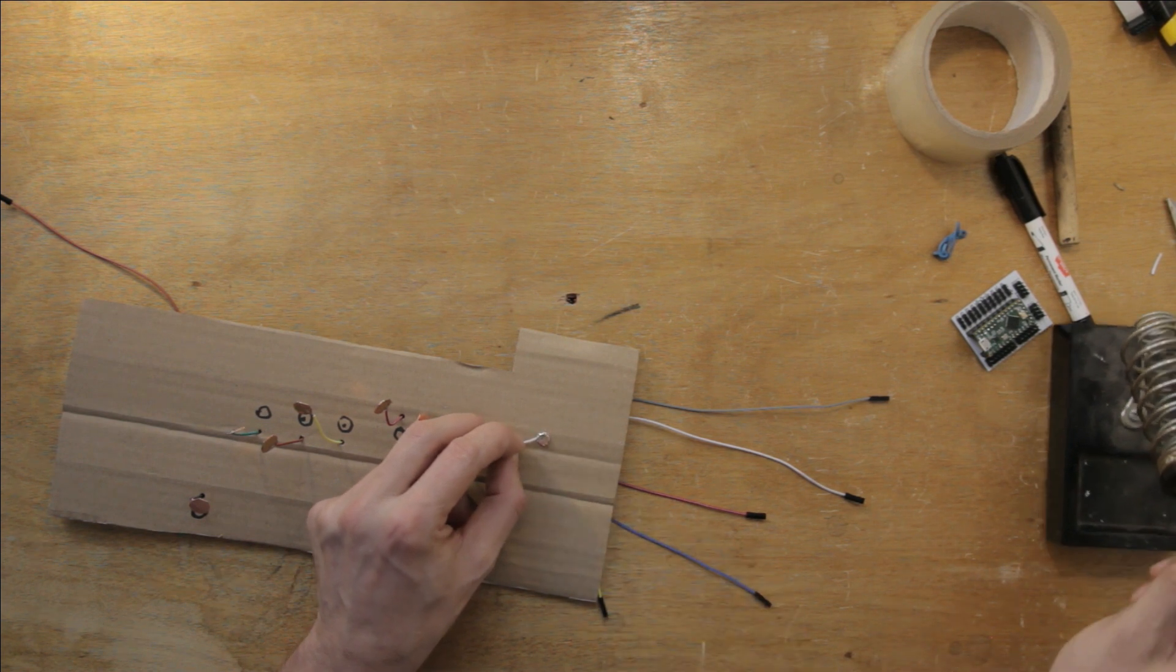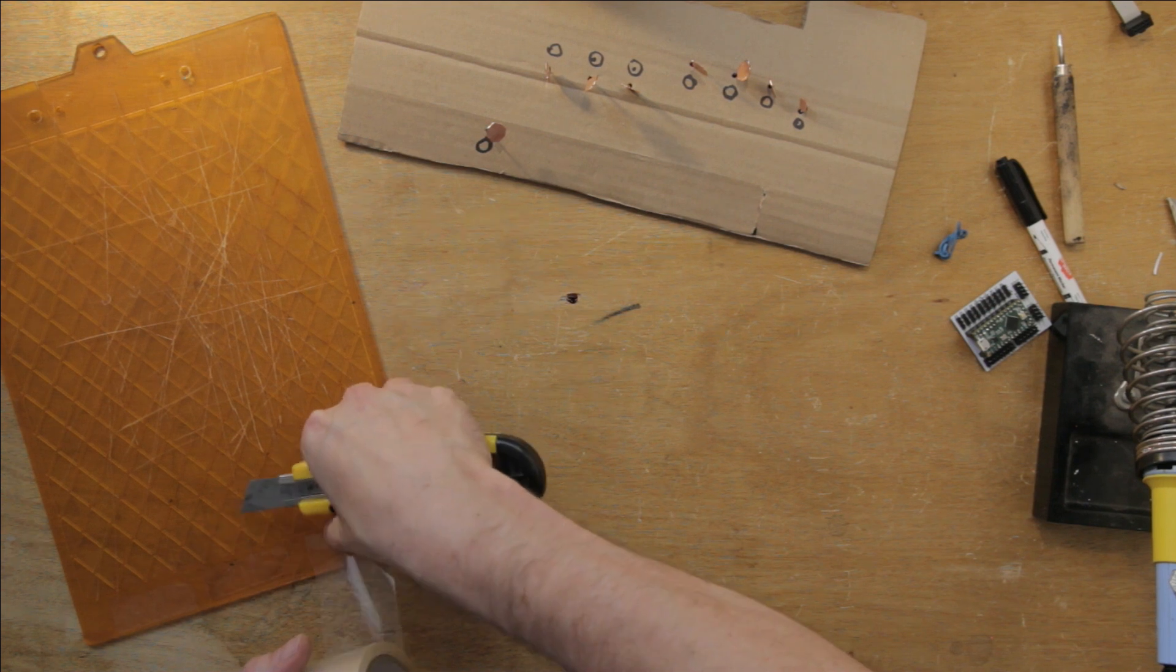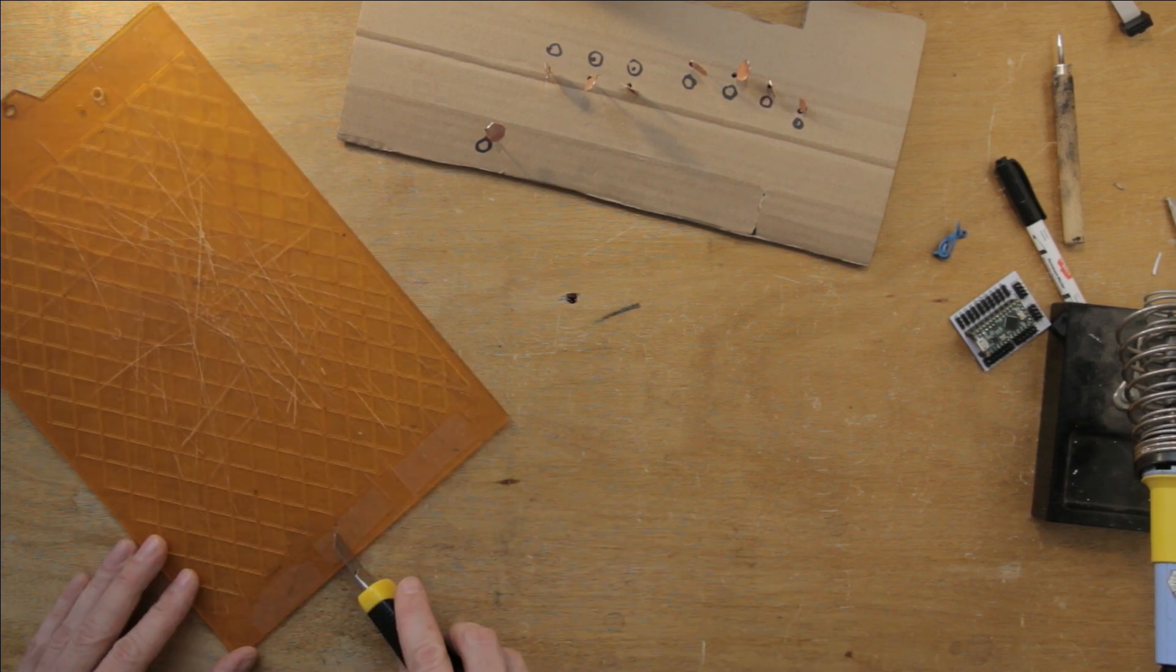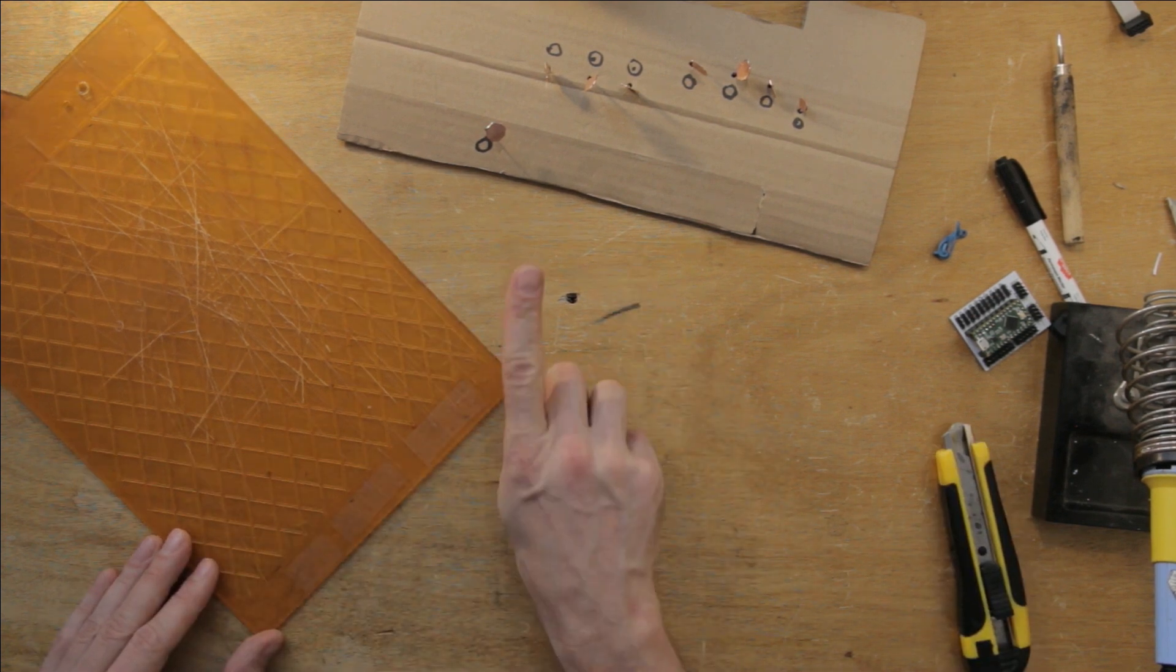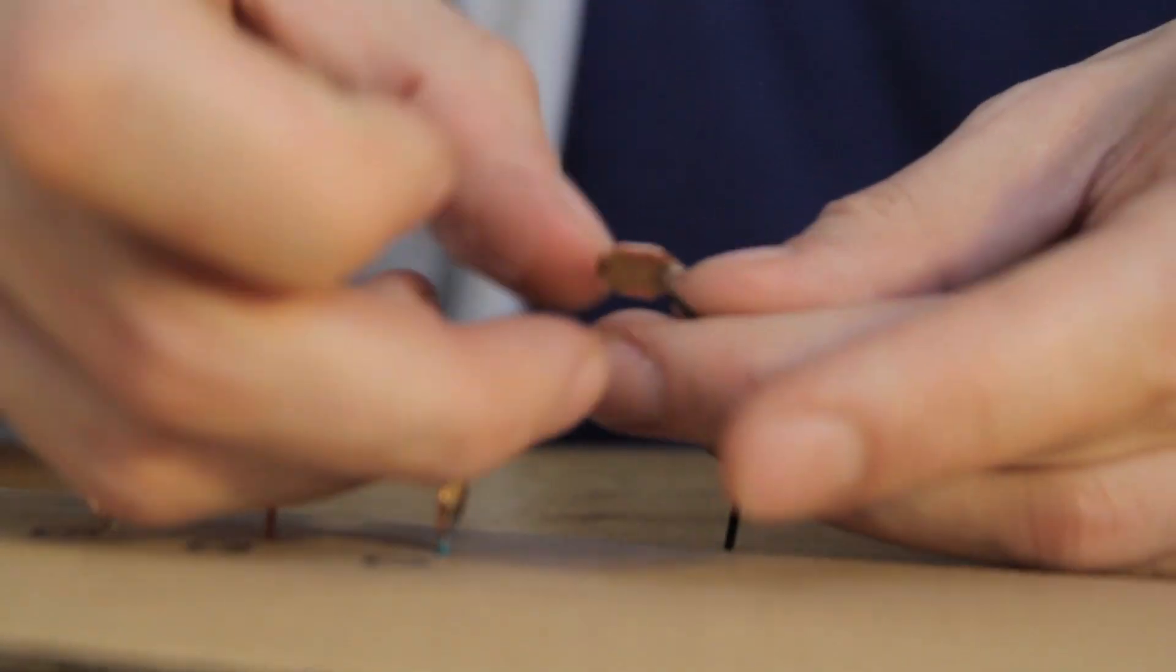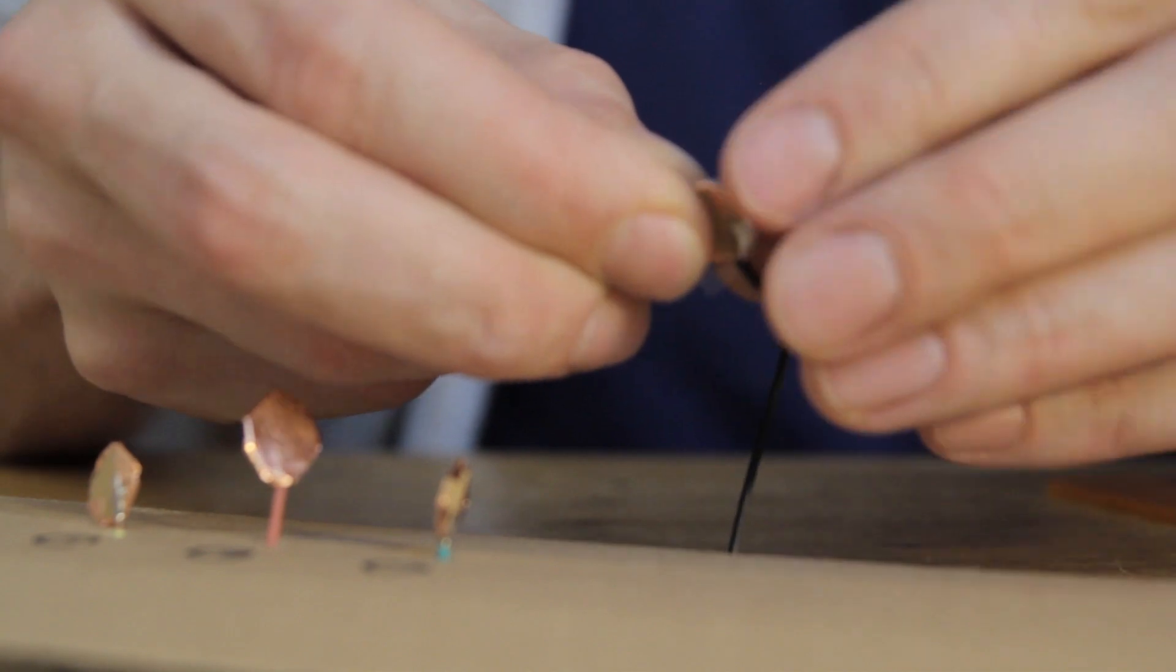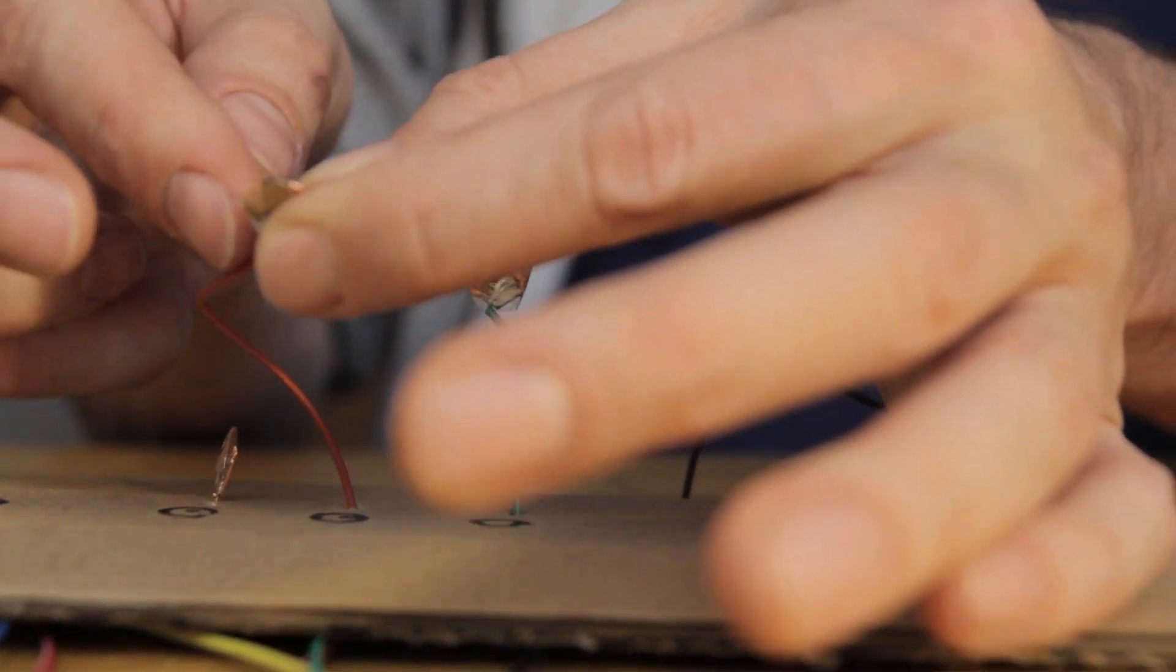But we're not quite done yet. Final touch on the keys is the dielectric layer, so I'll get some of this packing tape, and cut it into squares as well. Make sure that the squares are large enough to cover the keys completely, we don't want any of that copper to be exposed. Again, we fold down the corners, and just like before, you can make it as pretty as you want, and if you don't, then that's also totally fine.